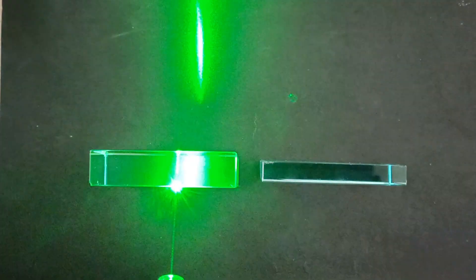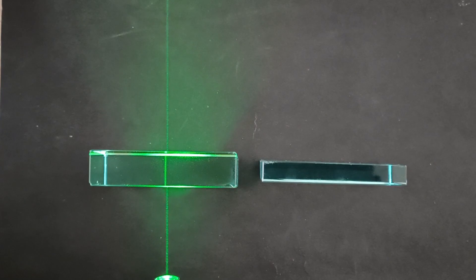We can see that there is no bending of light taking place over here if the laser light is falling normally to the surface.